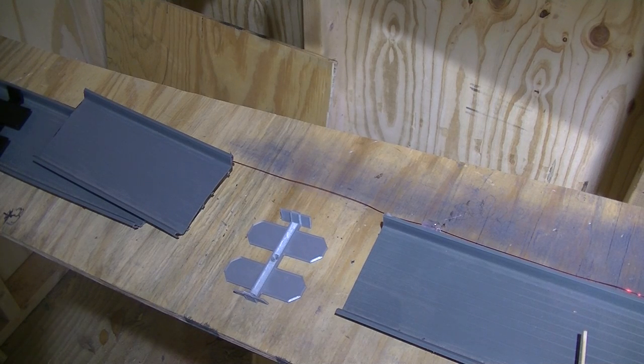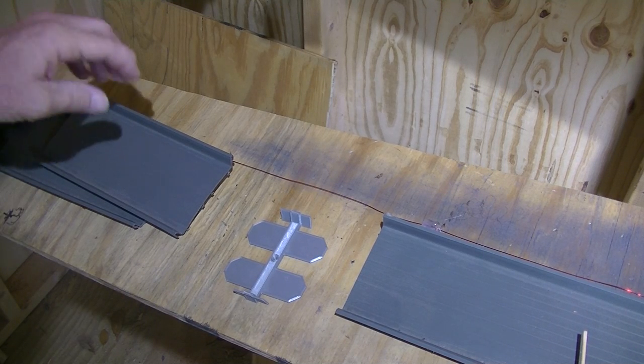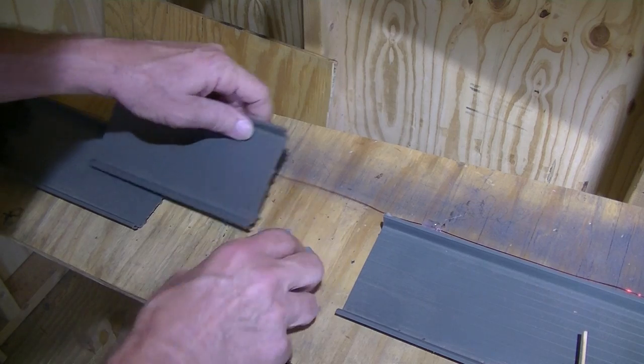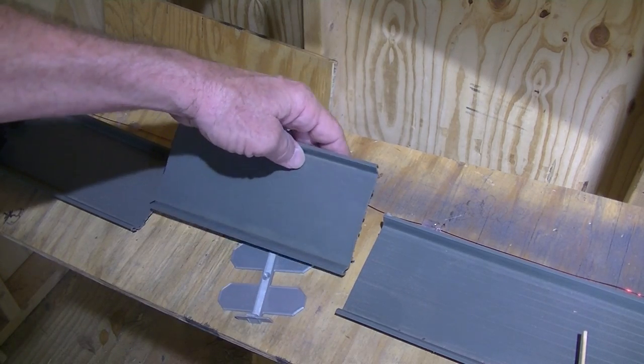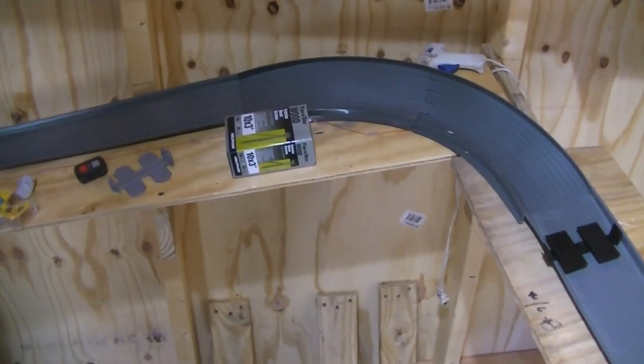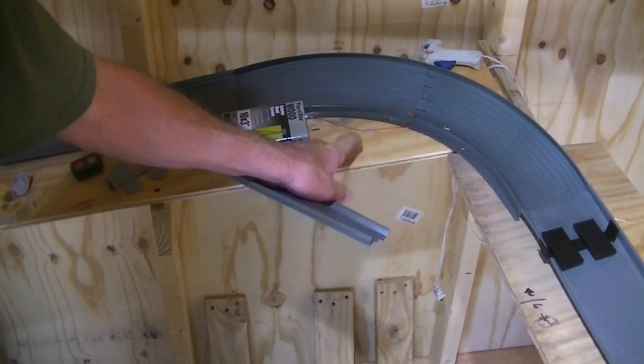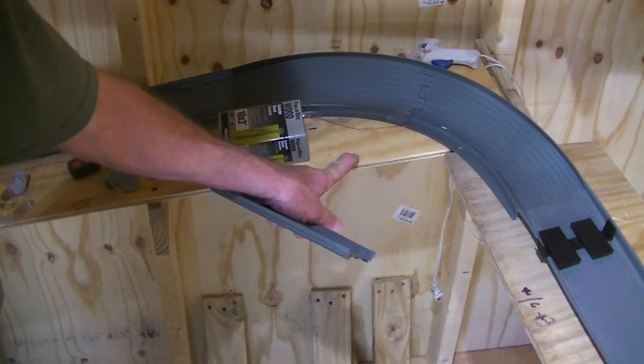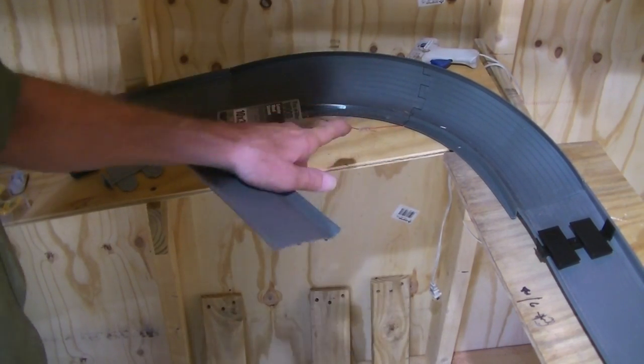Alright, so I'm gonna make this track a little bigger. I'm gonna insert this little piece right here and get it closer to the wall over here so it's not so close to the edge. I want it over there more, but not that far.